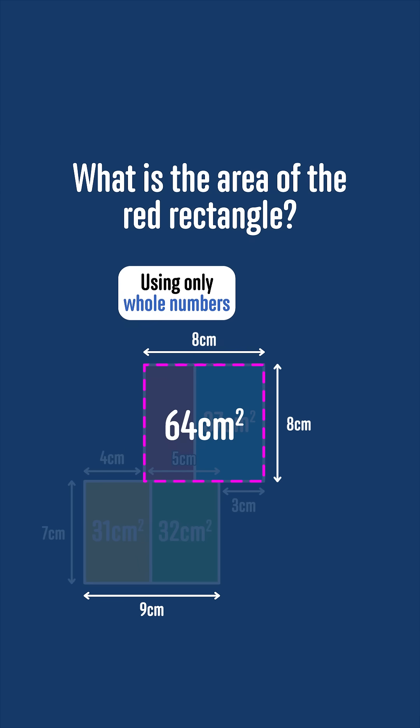Subtracting the area of the blue rectangle from the area of the two combined, we find that the area of the rectangle we wanted is 64 minus 37, which is 27cm squared.